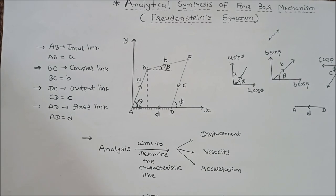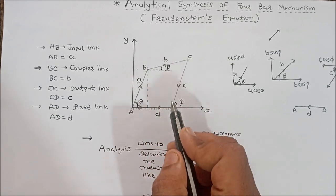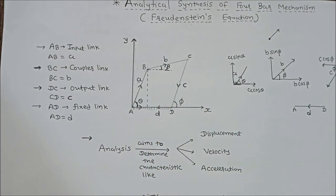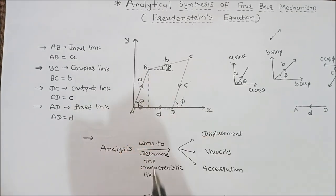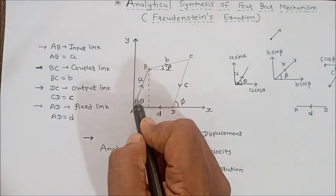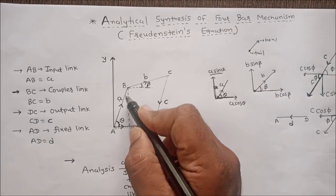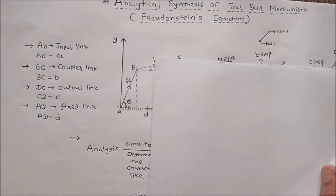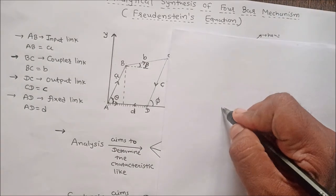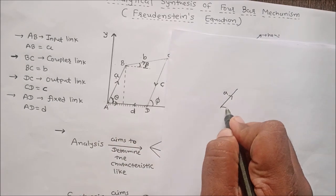Links AB, BC, and DC make angles theta, beta, and phi respectively with the x-axis. The relationship between angles and link lengths may be developed by considering each link as a vector. Consider link AB as a vector A, making an angle theta with the x-axis.